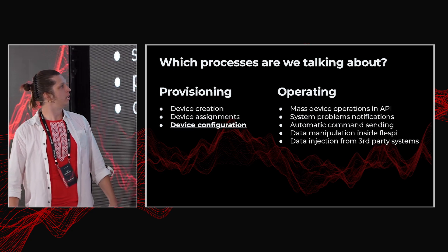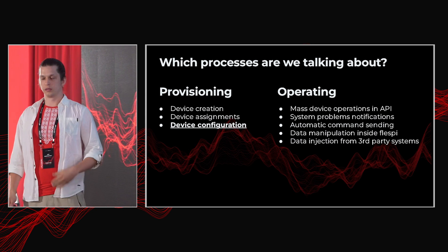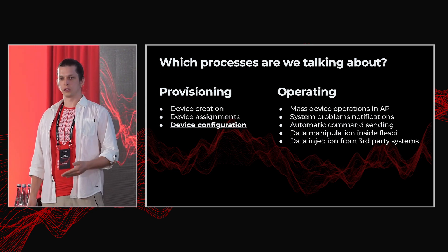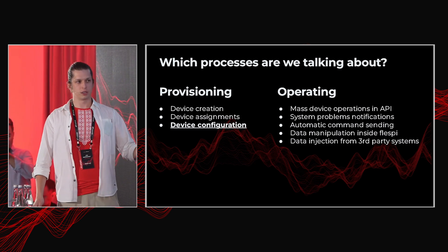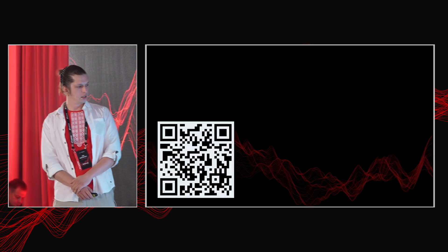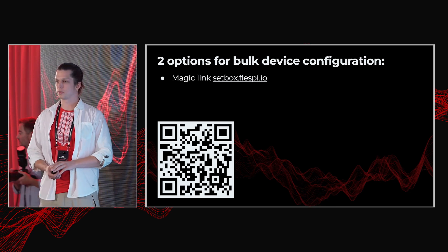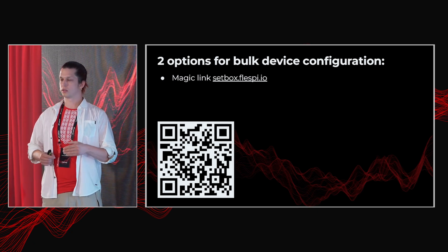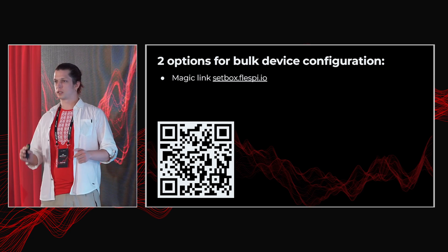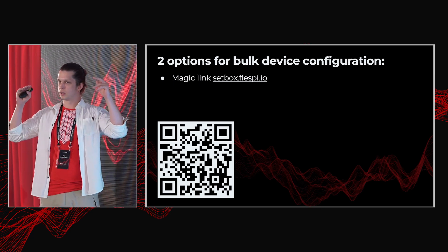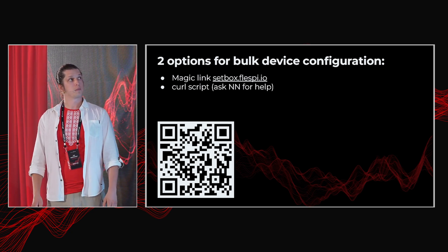The next case is device configuration. When you connect new devices, you may want commands to be sent automatically — for example, to change a reporting interval, configure geofences, or configure event triggering. There are two options for bulk device configuration. The first is the Magic Link SetBox at setbox.io — it has the same interface as the device settings section, but with the improvement that you can create groups of devices and groups of settings called macros, and send these macros to a group of devices to automate massive command delivery.